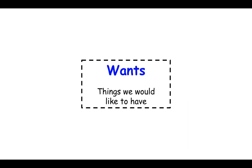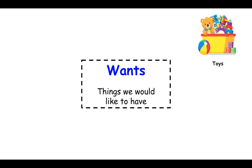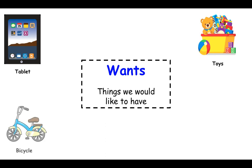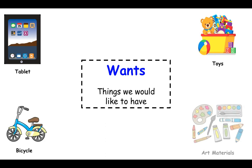Wants are the things that we would like to have but don't necessarily need. For example, that could be toys, a tablet, or any other technology, a bicycle, and art supplies. All of your crayons and markers and colored pencils and paint are things that we would want but not that we would need.